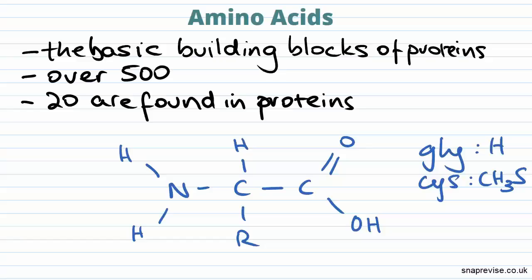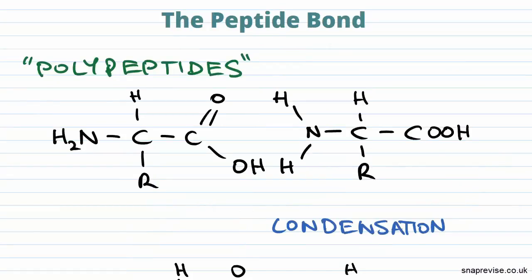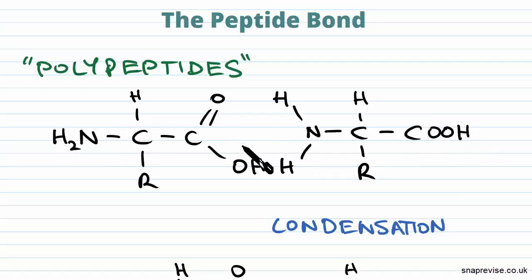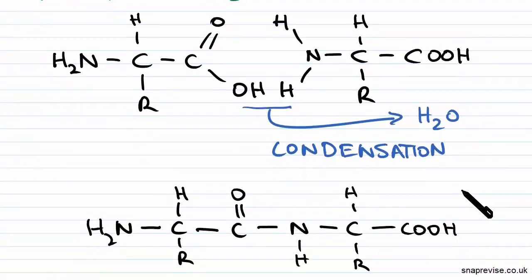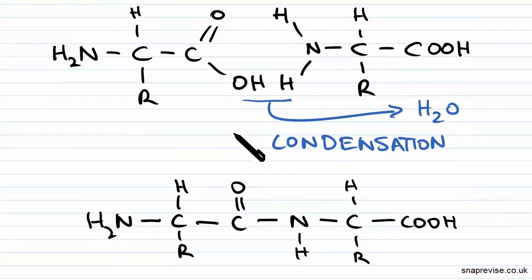We said that amino acids are the building blocks of proteins, so how do they actually form these proteins? They do so via peptide bonds, which is why proteins are often referred to as polypeptides. The peptide bond is formed through a condensation reaction, which produces water. The OH group of the carboxylic acid group of one amino acid is right next to one of the hydrogen atoms from the amino group of the second amino acid. These together form water, which is why this is known as a condensation reaction. The resulting bond in the middle is known as a peptide bond, and it's really important that you're able to recognise this.